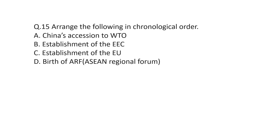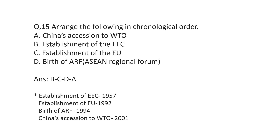Question number 15: arrange the following in chronological order. A is China's accession to the World Trade Organization. B is the establishment of the EEC (European Economic Community). C is the establishment of the European Union. D is the birth of ARF (ASEAN Regional Forum). The correct order is: first, establishment of the EEC in 1957; then the European Union established in 1992; then the ASEAN Regional Forum in 1994; and finally, China joined the World Trade Organization in 2001.